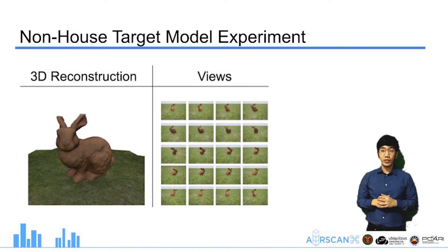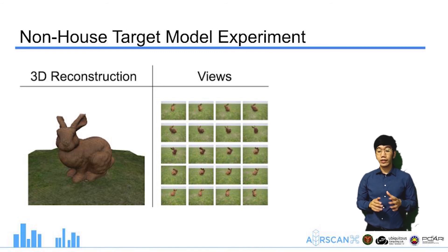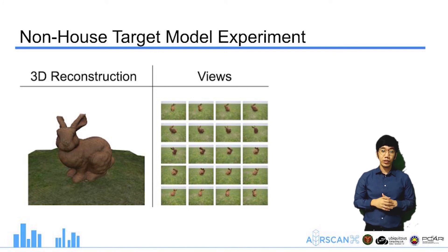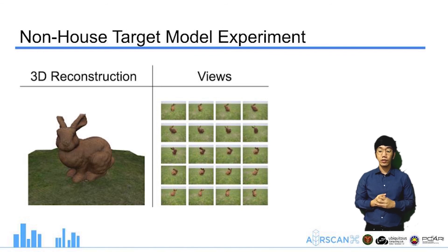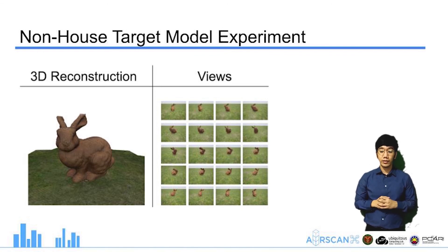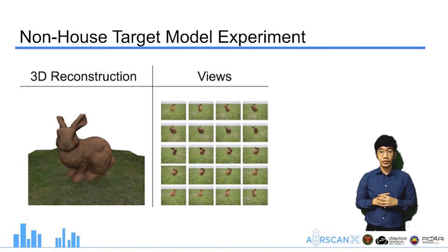The last experiment was the non-house target model experiment, where the Stanford bunny was used. This was conducted to test that ScanRL can target objects which are not houses. The 3D reconstruction with the selected viewpoints for the Stanford bunny showed that ScanRL is not limited to house models.